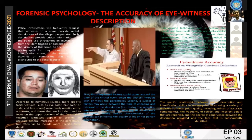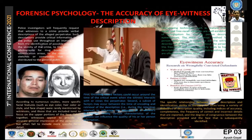Witnesses to a crime are often asked to describe the suspect many times over the course of an investigation. Research suggests this process of repeated retrieval can have both positive and negative effects. On the positive side, repeated recalling has been shown to increase recalled information and offer some protection to the memory trace. On the negative side, incorrect details generated early on get repeatedly recalled over time with increased confidence.